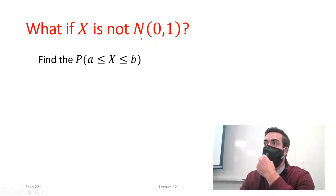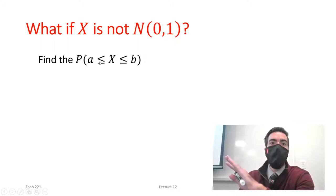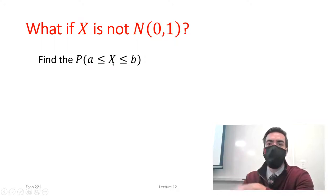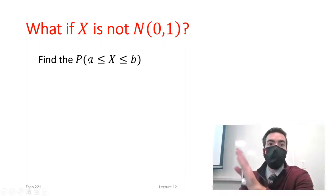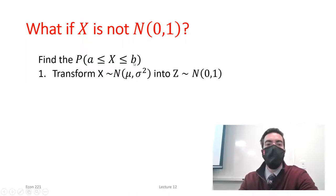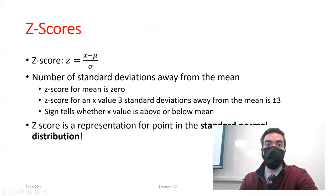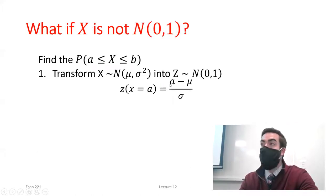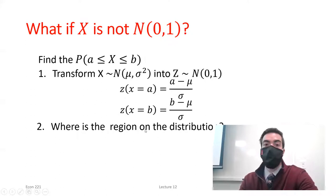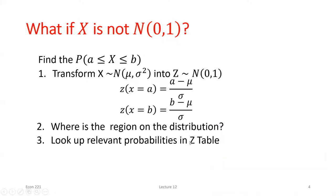What if we start with a variable that's not standard normally distributed? Say x is normally distributed with a mean of 50 and variance of 30. What's the probability we see that variable take on a value between 40 and 60? The first thing we want to do is convert those x values into z-scores. Once we have z-scores, we can use the standard normal distribution. We use the z-score equation for cutoff a and cutoff b, draw the region we're looking for, then find probabilities from the z-table.